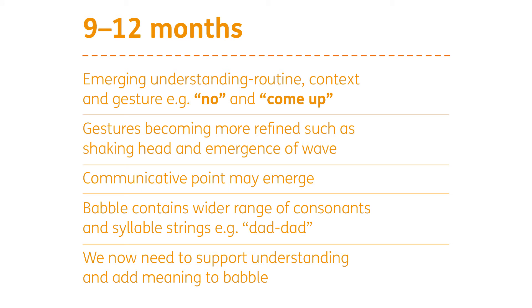Around 9 to 12 months, we start to get some early emergence of understanding of language. At this stage it's what we might call routine or contextual, or in addition to a gesture. A young child might understand something like 'no' because it's used in context where they might be doing something they're not supposed to, or a parent asking them to come up while also using a gesture such as outstretched arms. They're drawing on what's happening in the environment and what they hear regularly to help understand those words.